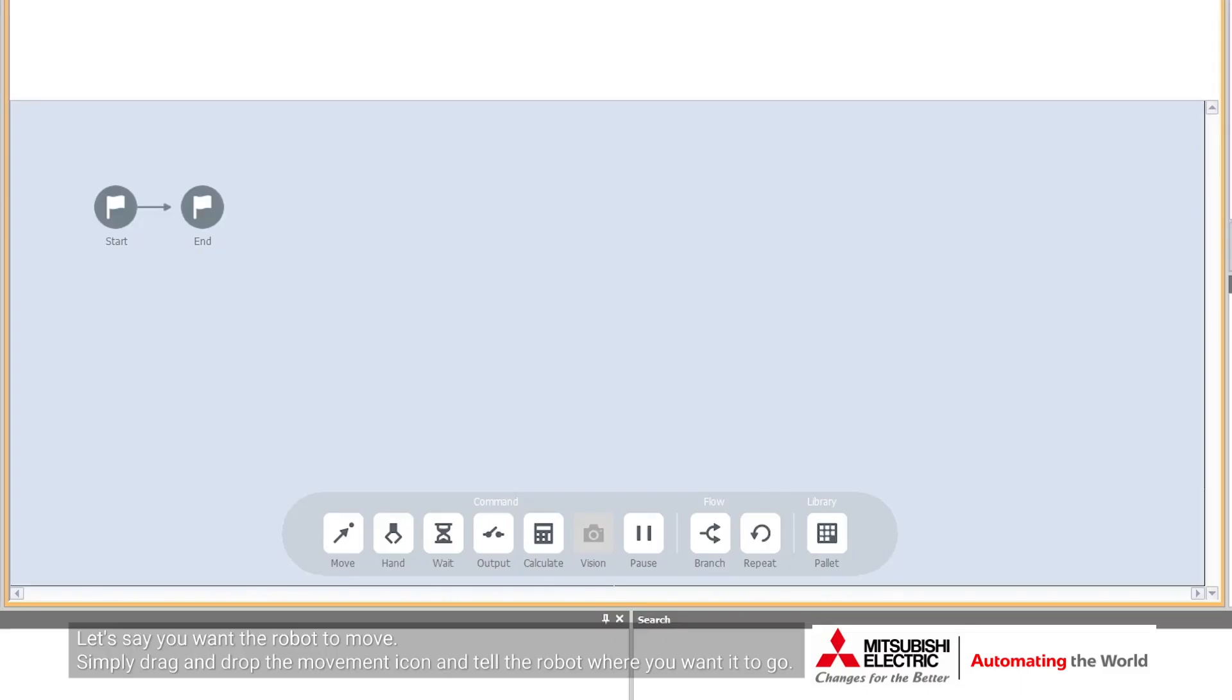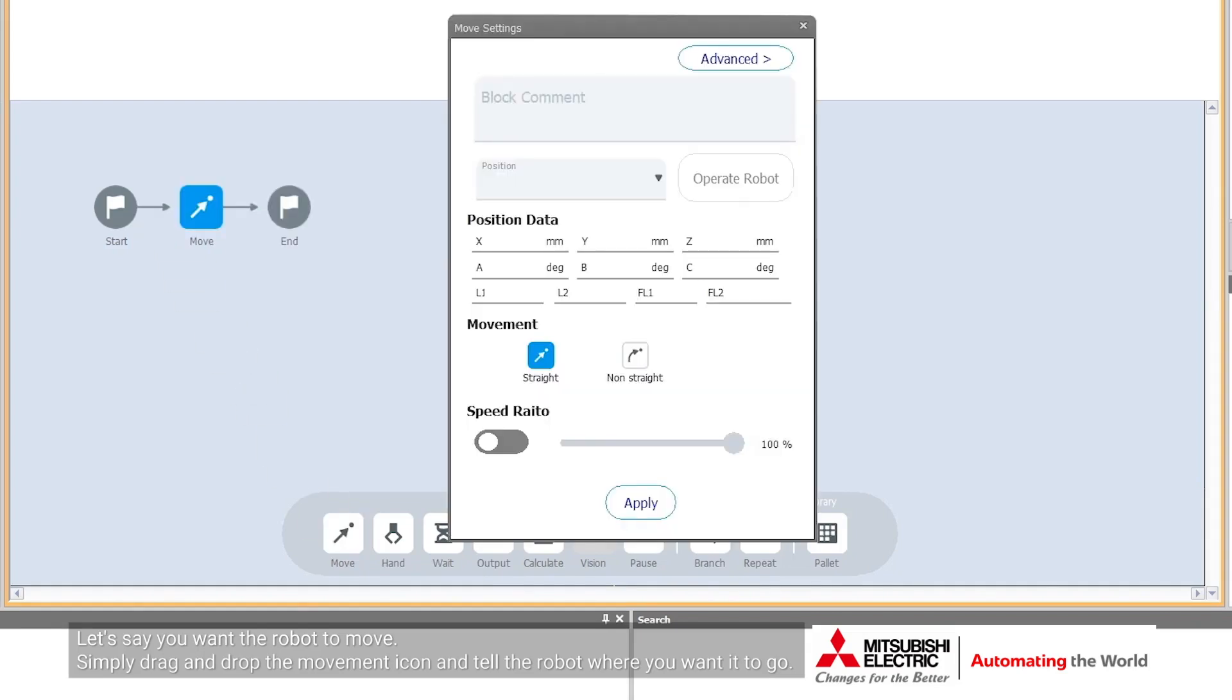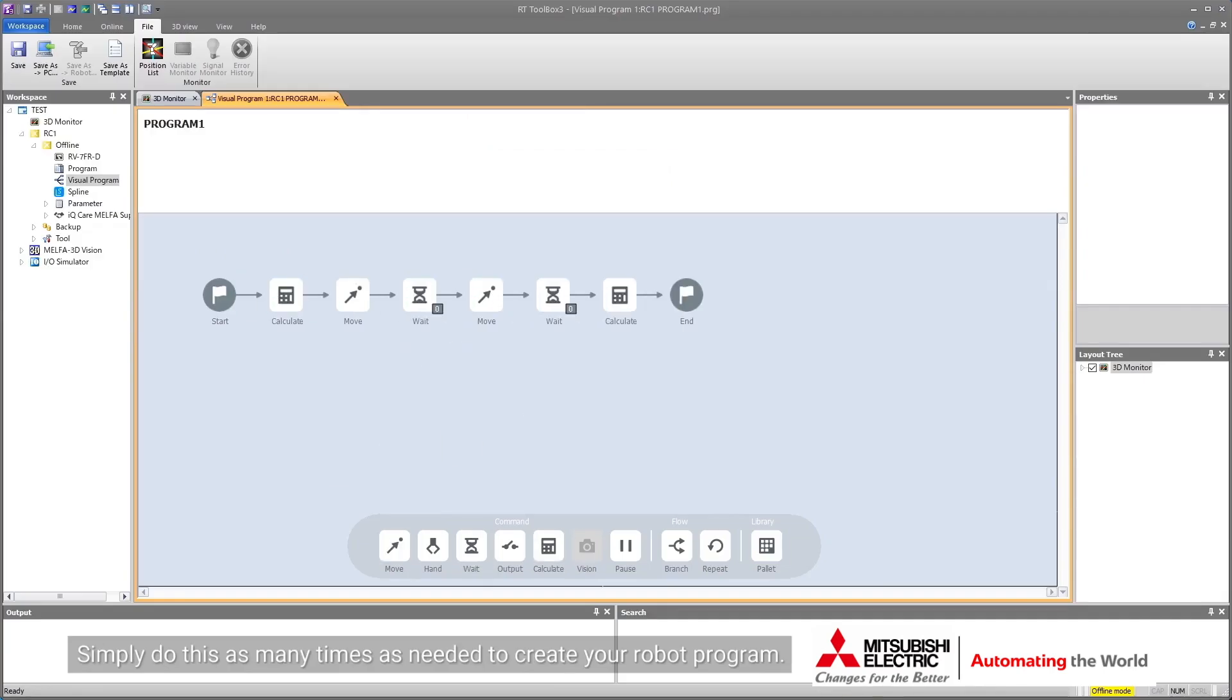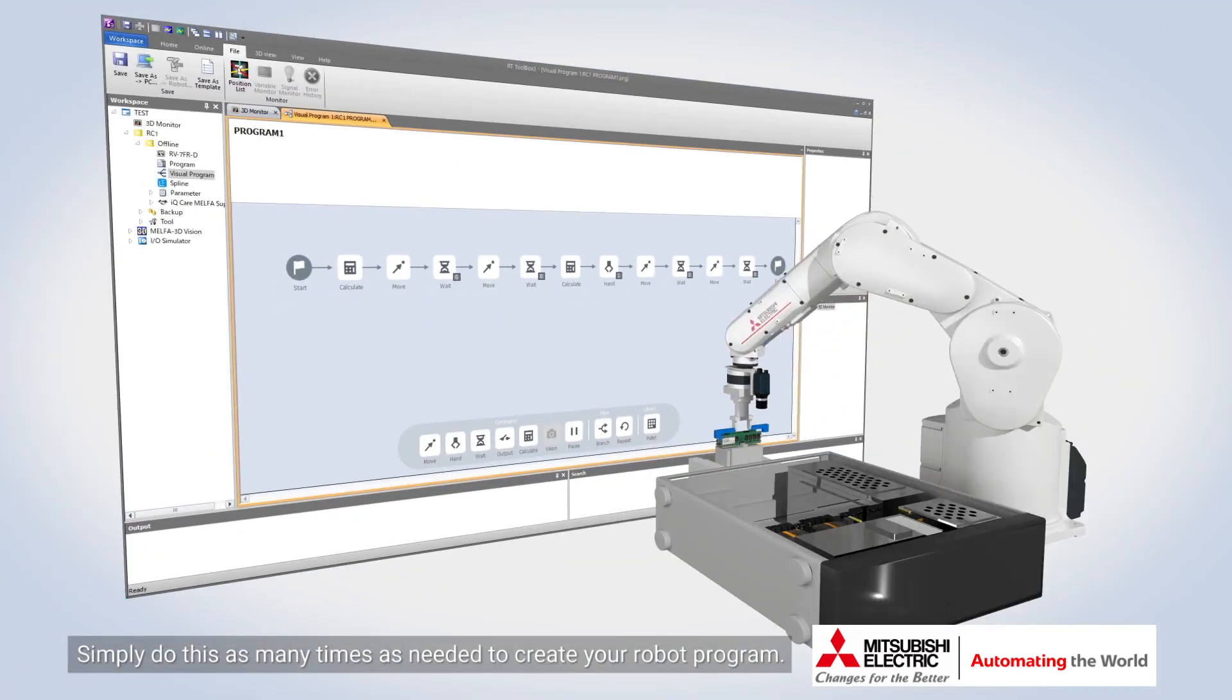Let's say you want the robot to move. Simply drag and drop the movement icon and tell the robot where you want it to go. Do this as many times as needed to create your robot program.